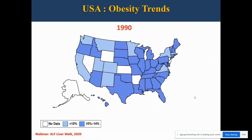This graph looks at the obesity trend throughout the U.S., showing the prevalence of obesity by state. As you can see, there were several states in the 10 to 14% obesity range in the 1990s. Let's see what happened over the next 10 years.